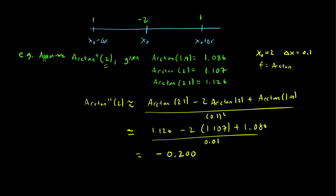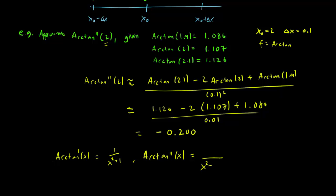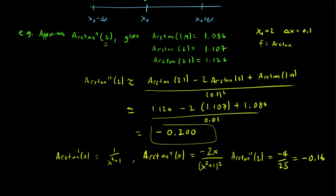Let's see how close we got. You may know that the derivative of arctan(x) is 1 over (x squared plus 1). Therefore, the second derivative — using the quotient rule, low d-high minus high d-low — gives minus 2x over (x squared plus 1) squared. That's the second derivative of arctan(x). Plugging in x = 2, we get minus 4 over 25, which equals negative 0.16. This is not too far from our approximation, so this formula makes a pretty good approximation.